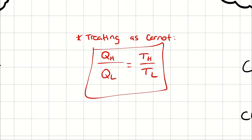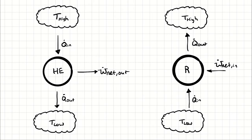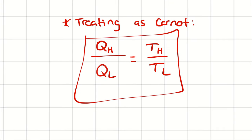Note that this is written as the heat transfer on the high temperature side over the heat transfer on the low temperature side, as opposed to Q in over Q out. The metaphor I like to use for the Carnot substitution is that waterfall again. If you build a water wheel halfway up the waterfall, you can only tap into half the available power. If you build it a third of the way down, you can only tap into a third of the available performance.